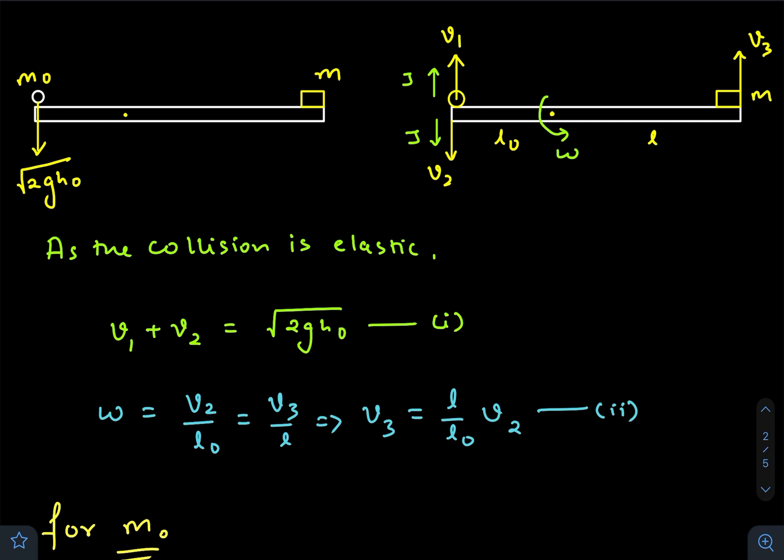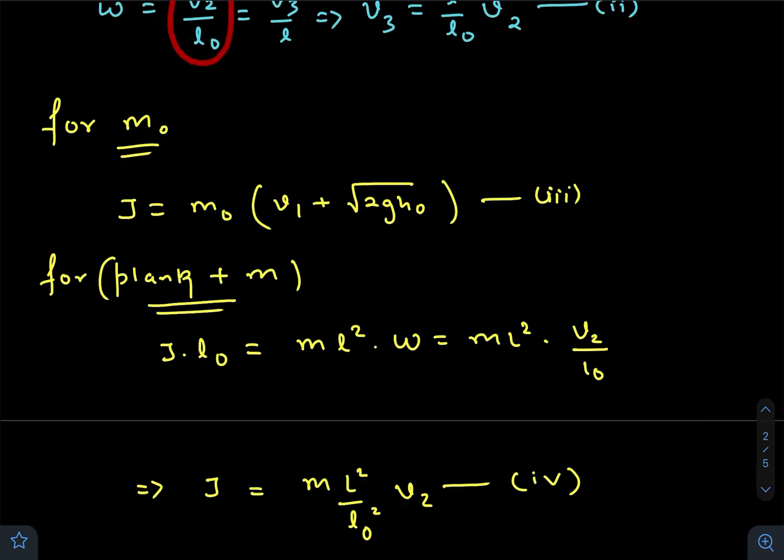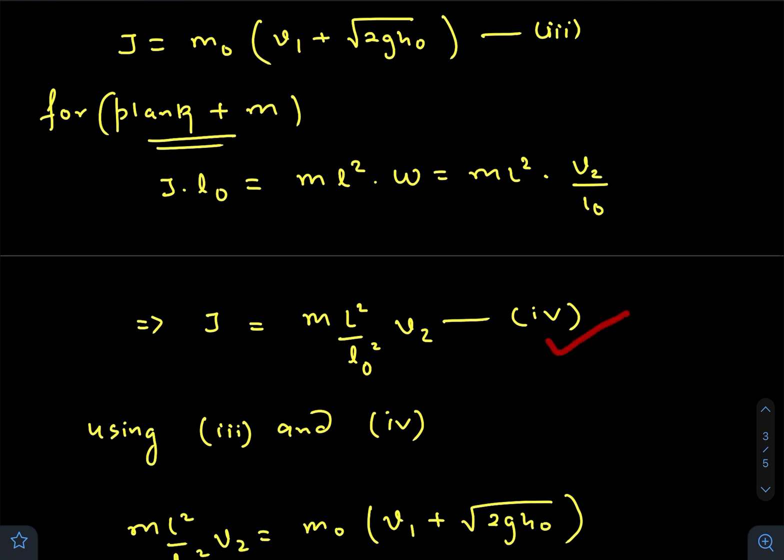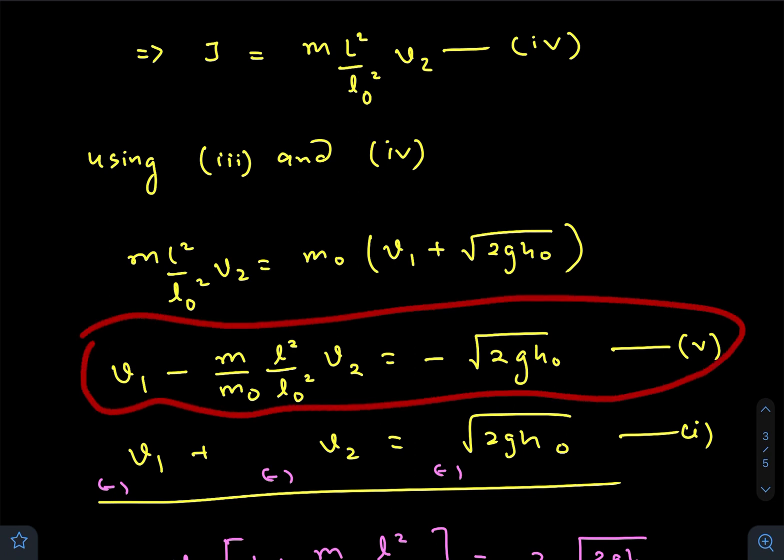which is ml²ω. So ω is v₂/l₀ as we've already discussed. Solving this, we get J equals this value. We put this value of J here, and comparing using equations three and four, we come to this equation. From here,